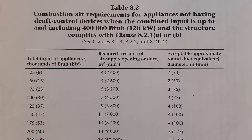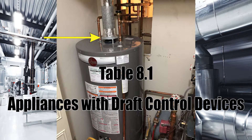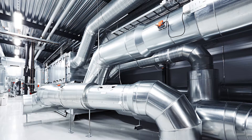Before we get into sizing, let's go through table 8-2: combustion air requirements for appliances not having draft control devices when the combined input is up to and including 400,000 BTUs per hour (120 kilowatts) and the structure complies with clause 8-2-1A or B. The major difference is that table 8-1 is for appliances with draft control devices, while table 8-2 is for fan-assisted appliances. They are different and the number values reflect that.